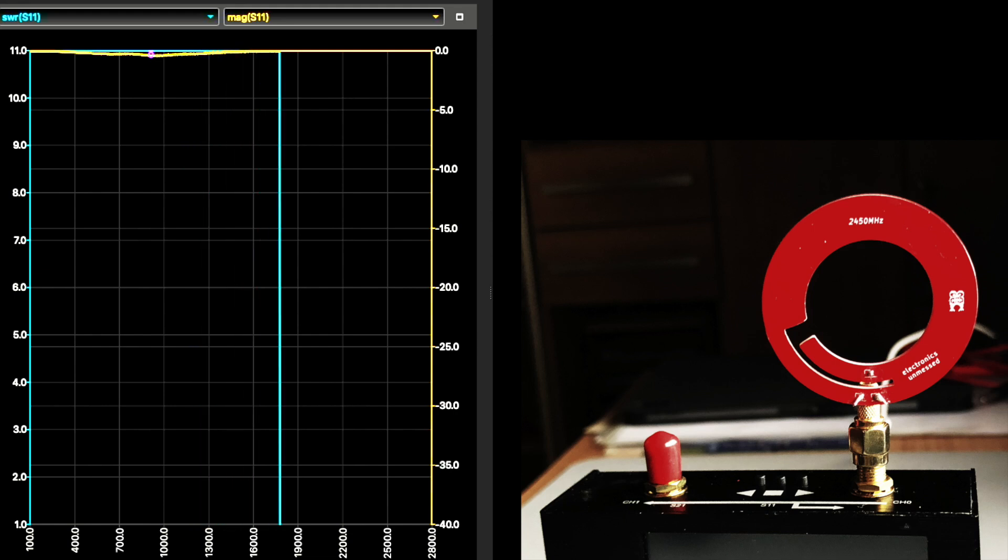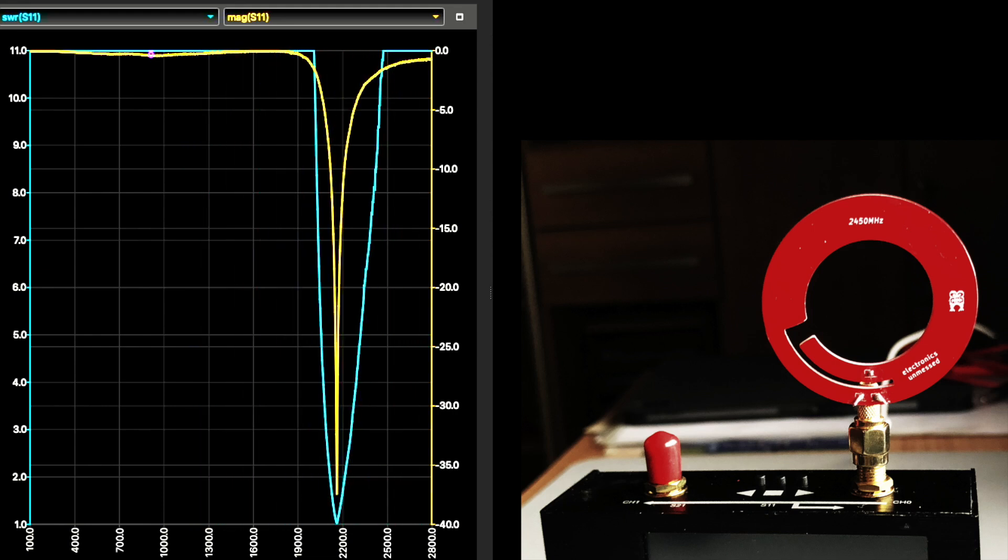With the 2450 MHz version, the resonance is 11% below the desired frequency. Here, the permittivity of the substrate has a stronger effect, because its thickness is greater in relation to the wavelength.